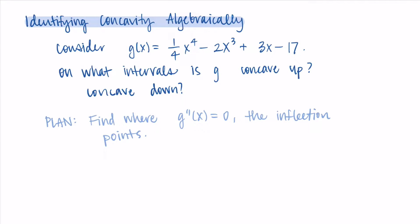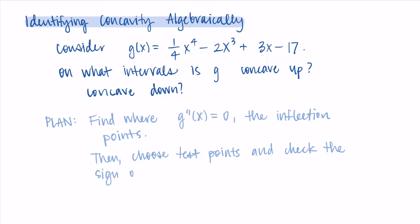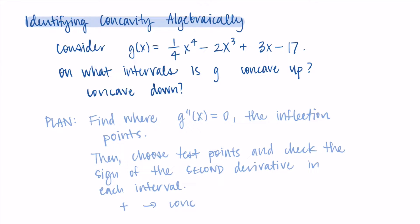These are our inflection points — similar to finding critical points, except now we're finding inflection points by setting the second derivative equal to zero. Then, to determine which intervals are concave up and which are concave down, we choose test points — one for each interval created by the inflection points — and check the sign of the second derivative in each interval. If the second derivative is positive, it's concave up; if negative, it's concave down.